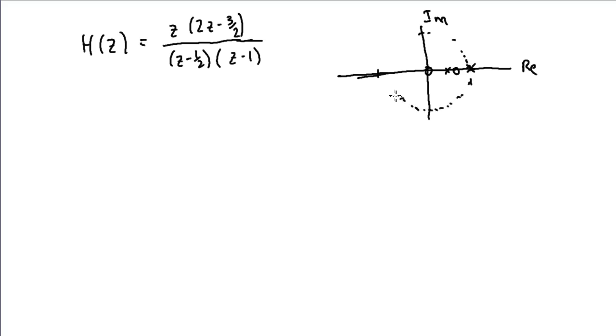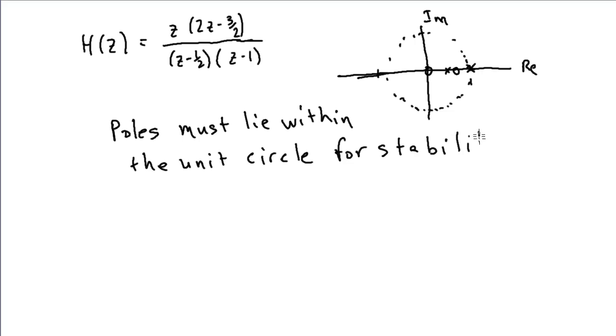The condition for stability that we'll talk about is, in order to have a stable discrete time system, poles must lie within the unit circle. So that's a circle in a complex plane of radius 1 for stability.